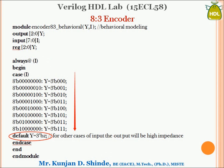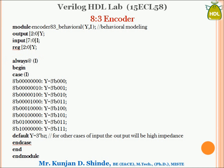The always block has a sensitivity list, meaning it executes only when the input I changes — from 0 to 1 or 1 to 0. Whenever the always block executes, the case statement runs, and based on the condition of I, the output Y is updated. This is how behavioral style of coding works.